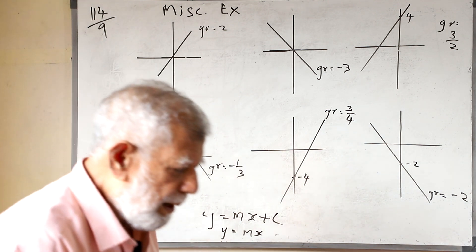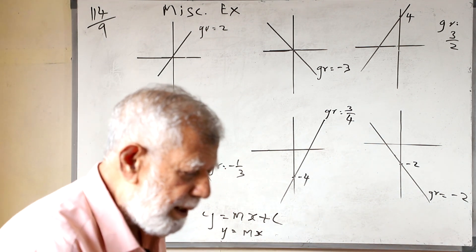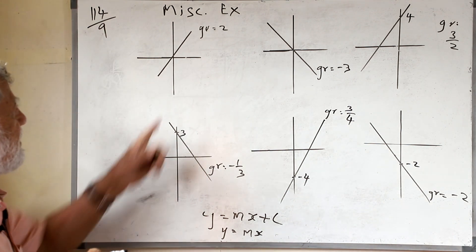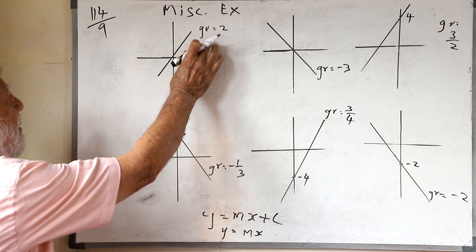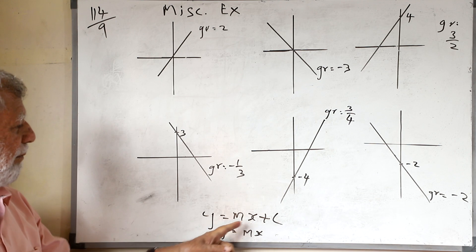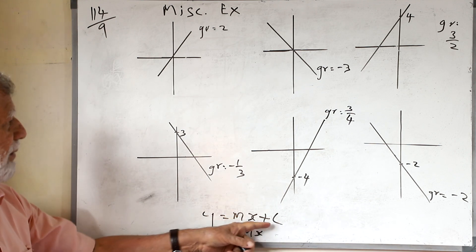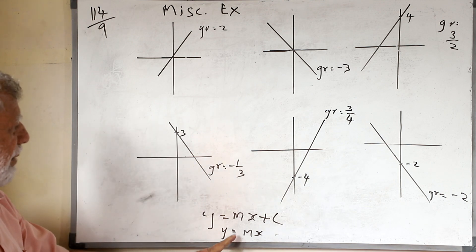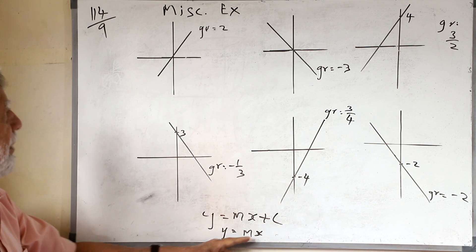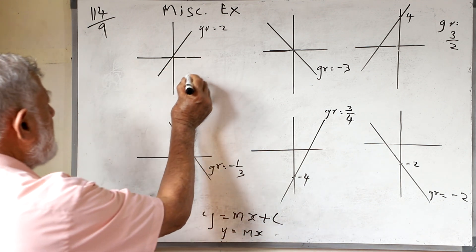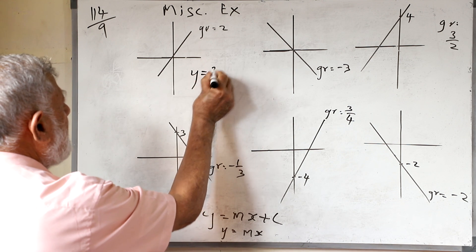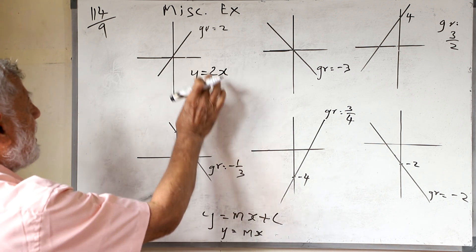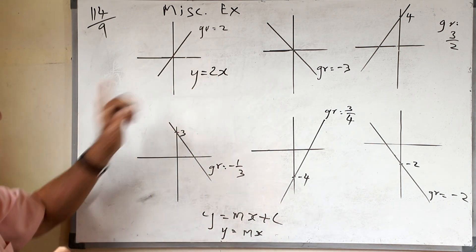They are told to write the equation of the function of the graph sketched below. For the first one, the gradient given is 2. In y = mx + c, m is the gradient, and c is where it cuts the y-axis. This line is going through 0, so it should be y = mx. The gradient is 2, so the equation of this line is y = 2x.